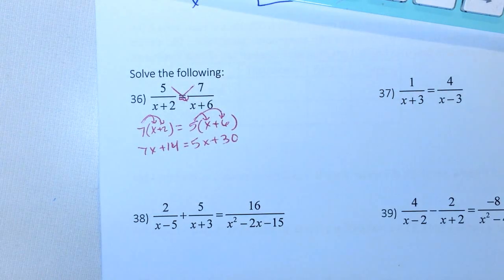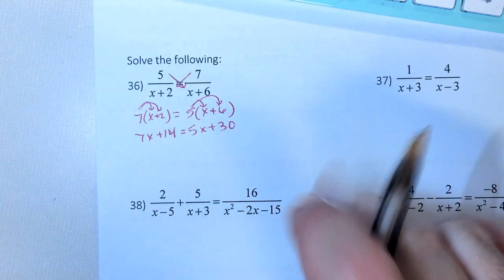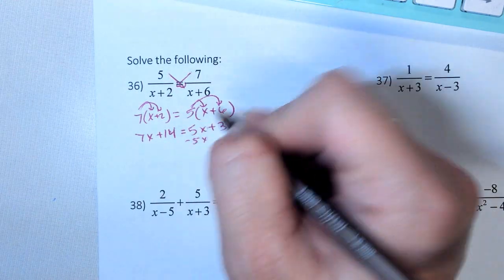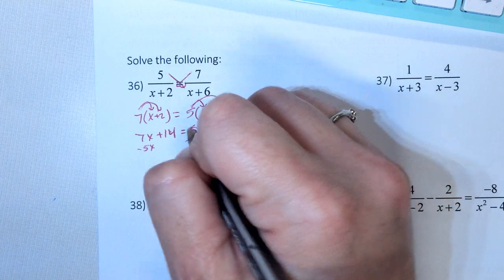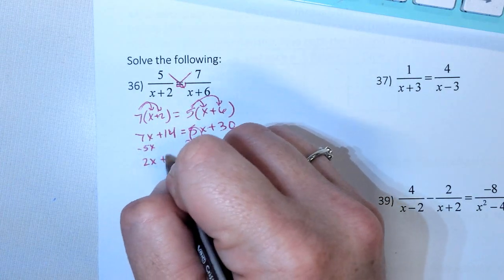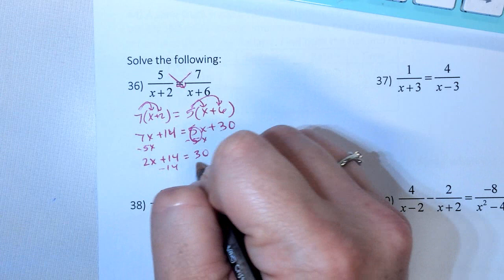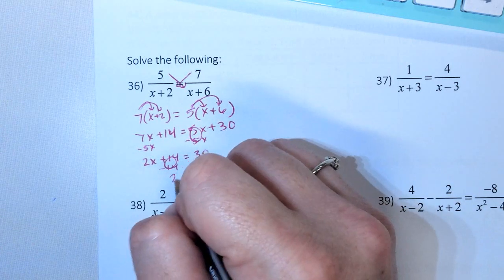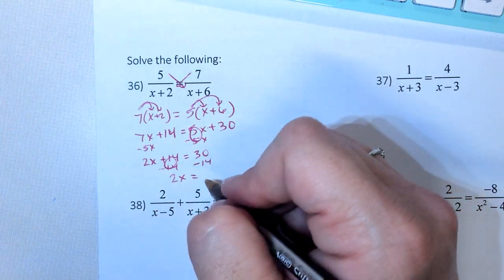I always like to start with moving my smallest x first. So minus 5x minus 5x. I get 2x plus 14 equals 30. Minus 14 minus 14. 2x equals 16.